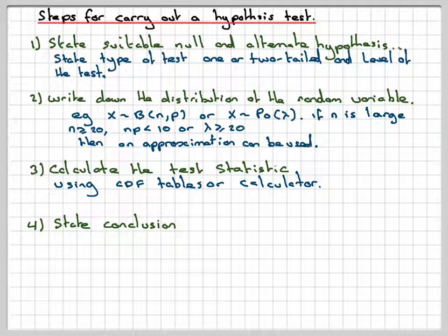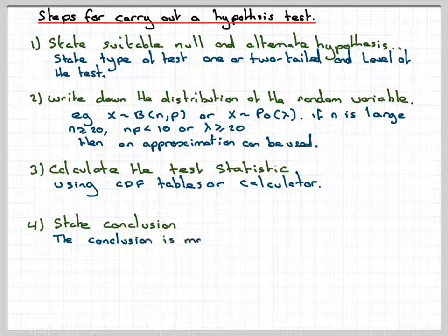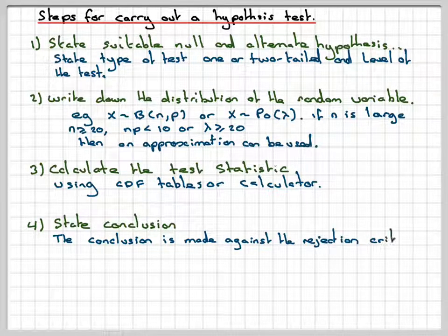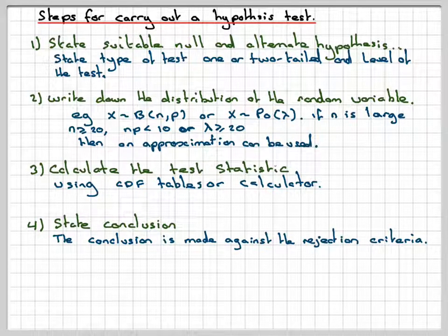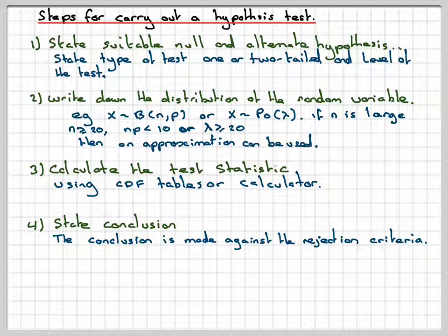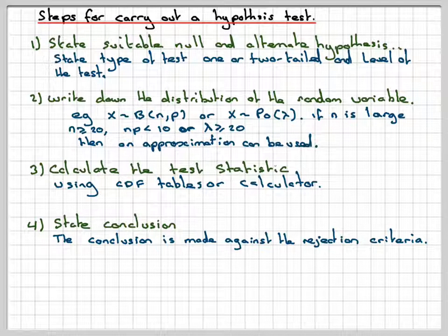Number four, state the conclusion of the test. So the conclusion is made against the rejection criteria. So where is that boundary for the 5%? Do I lie in it, in the critical region, or do I not lie in the critical region?